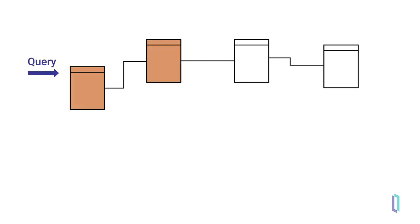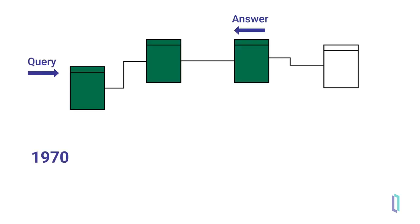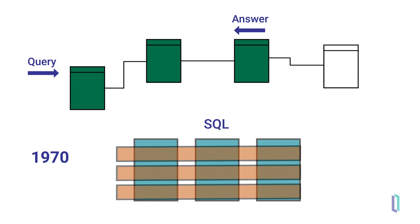Relational databases were used for the first time in the 1970s to organize data. To process database queries, we need to use Structured Query Language, or SQL. SQL refers to two dimensions: columns and rows. Because SQL was designed to handle two-dimensional tabular data, the terms column and row have meaning in SQL syntax.